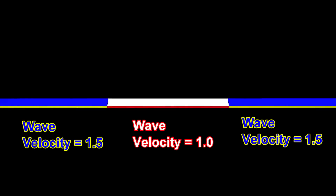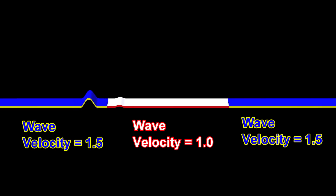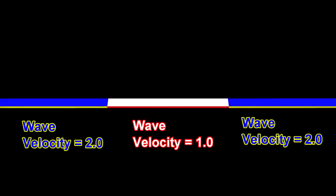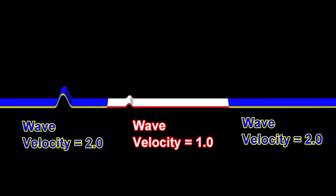Now, for the first time, we have a scenario where the wave velocity inside the middle material is slower than the wave velocity in the blue material. The situation is fundamentally different. For example, notice how the wave inside the middle material now reflects without being flipped upside down.